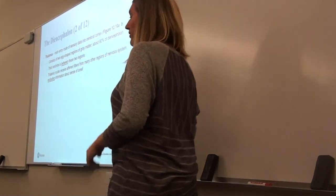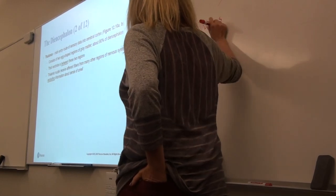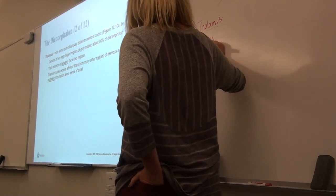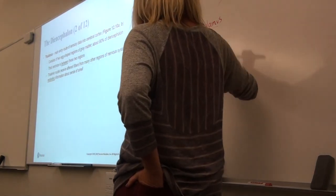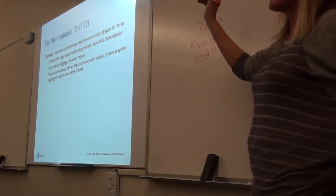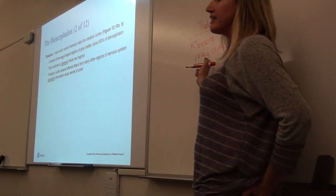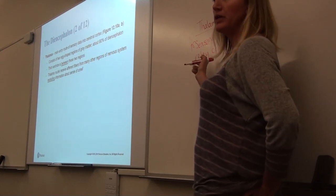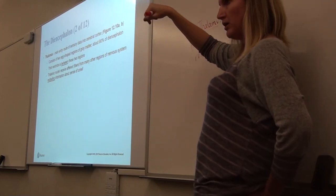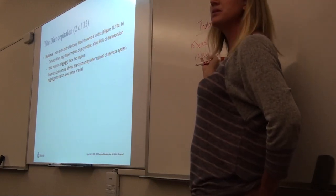The thalamus is our major sensory relay center. This is where all of your sensory information goes. You feel something because it passed through your thalamus and then went up to your primary sensory cortex. Anything that goes up to your primary sensory cortex on your cerebrum passed through your thalamus. Anything that you see or hear passed through your thalamus before it went to your auditory association area or your visual association area. So the thalamus is your relay center.